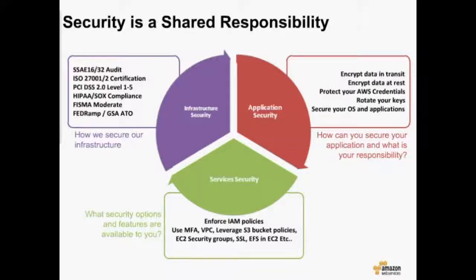The first two — infrastructure security and the security of the underlying services — are all the responsibility of Amazon. We're responsible for securing the physical security of our data centers, the networking security, all the way up through the virtualization layer, where the responsibility gets handed off to the customer. Everything above the hypervisor, starting at the operating system all the way up through the applications, is the responsibility of the customer to secure. This is where our partner ecosystem provides a lot of value.